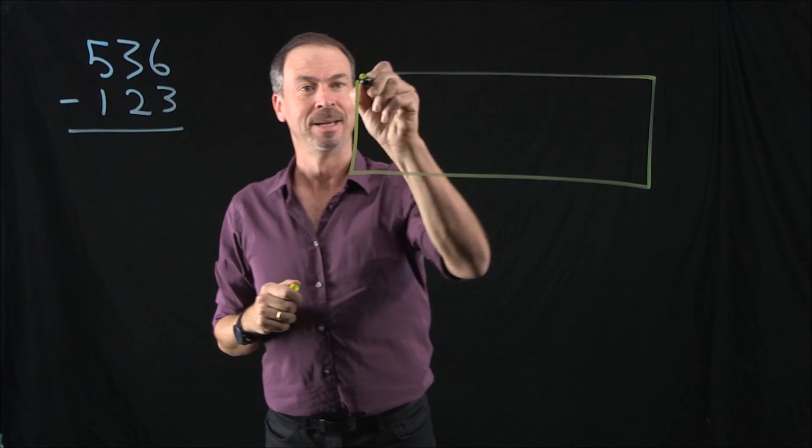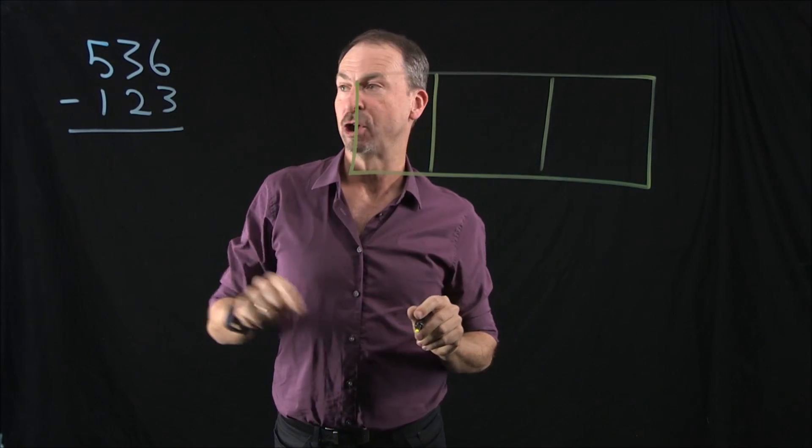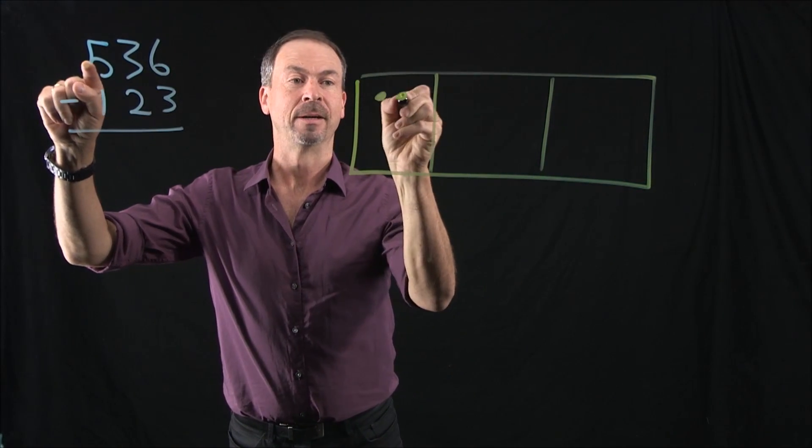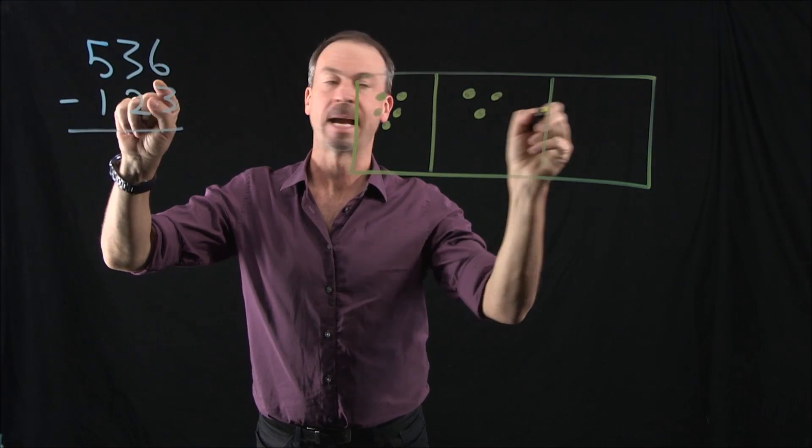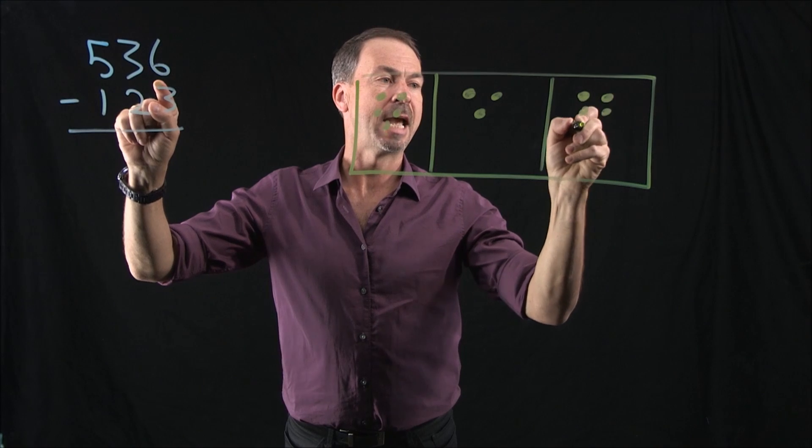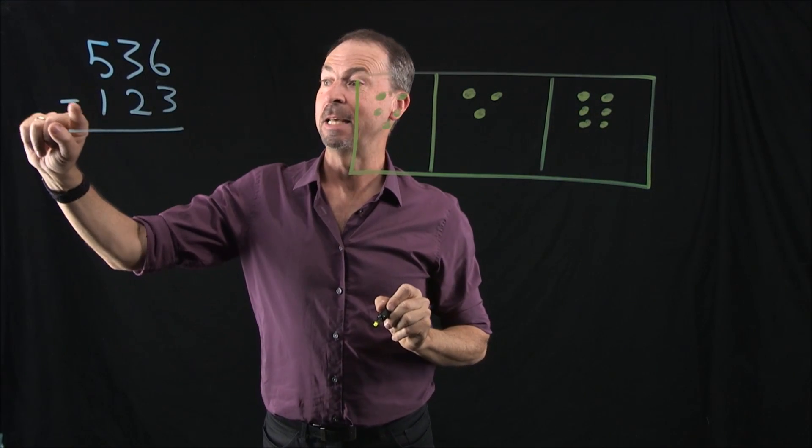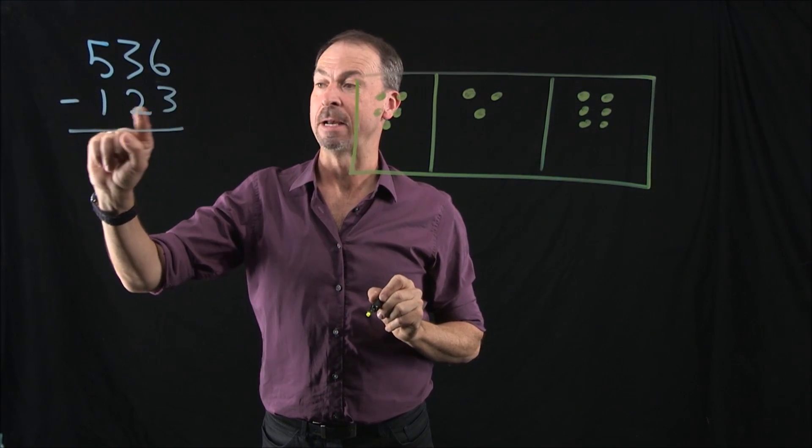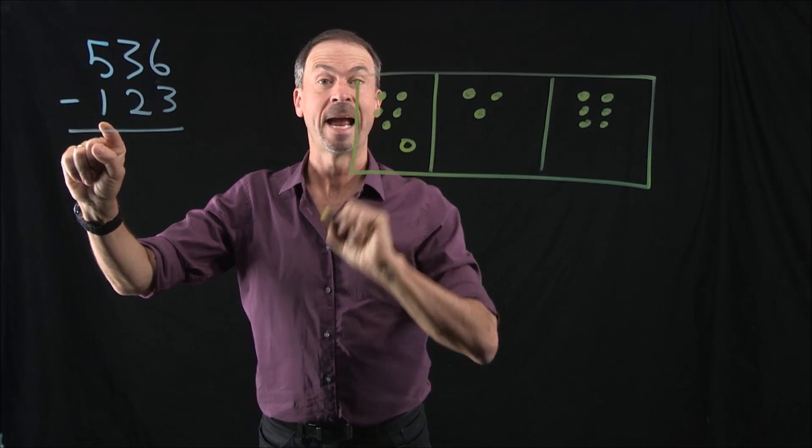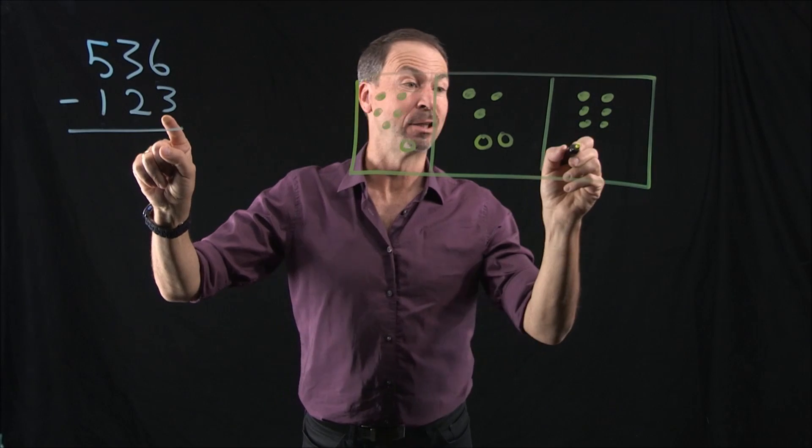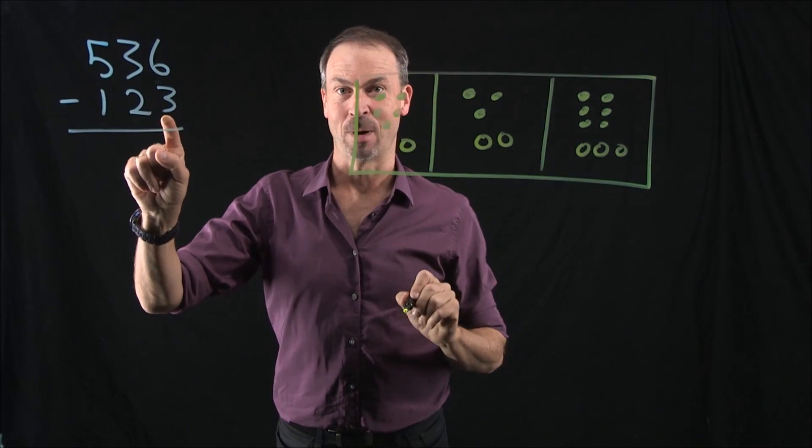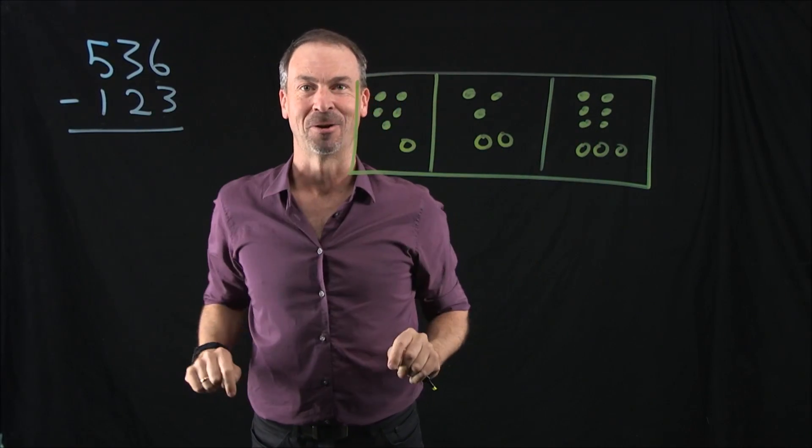So what do I actually mean by that? If I draw this in a 10-1 machine, 500, there it is, and 30, three 10s and 6, then I'm saying please add to that the opposite of 123. The opposite of 100, one anti-100. The opposite of two 10s, two anti-10s. Opposite of three 1s, three anti-1s. There we are, dots and anti-dots at my disposal.